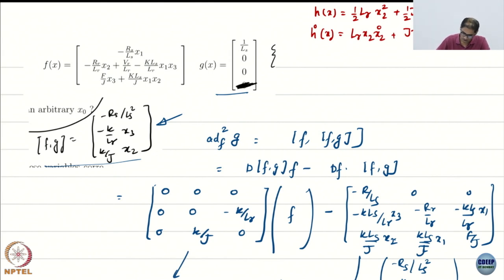This is lr x2 x2 dot plus j x3 x3 dot. Notice that x2 dot and x3 dot do not contain the control. So this is going to give me some big mess. I am quite sure. I am not even going to write it. But I am going to compute h double dot.